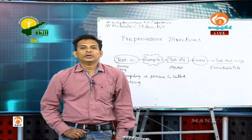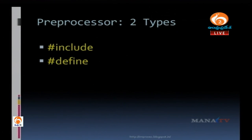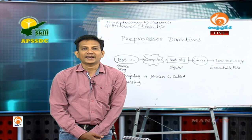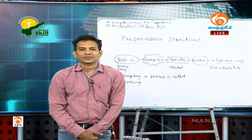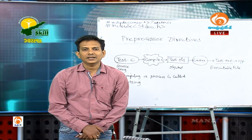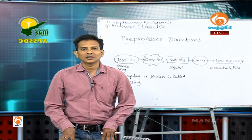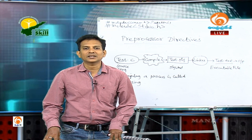There are two types of preprocessor directives. One is #include, used for header files. The second is #define, used for macros. #include is used to include header files such as stdio.h, conio.h, and math.h.